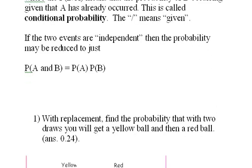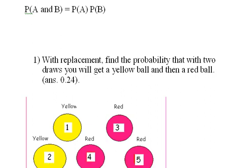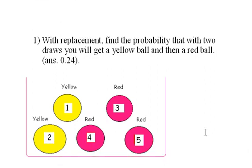And I have a short little problem here. Getting back to the balls in the urn. With replacement, find the probability that with two draws you will get a yellow ball and then a red ball.